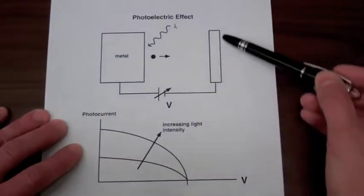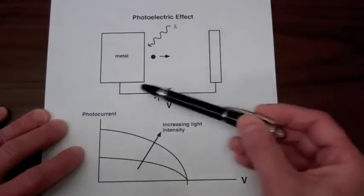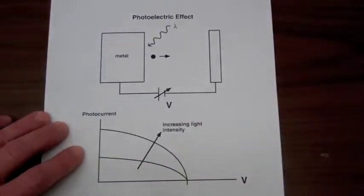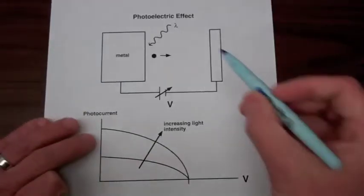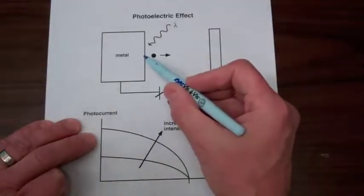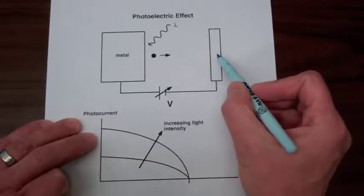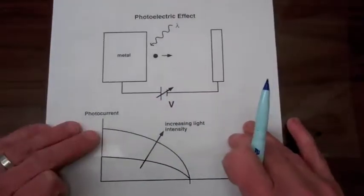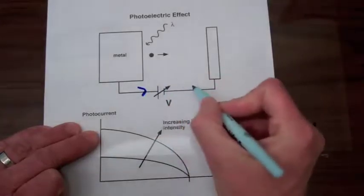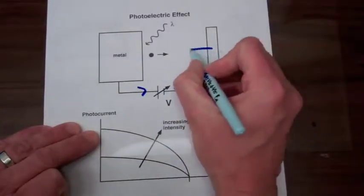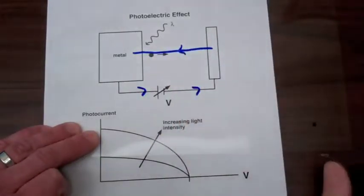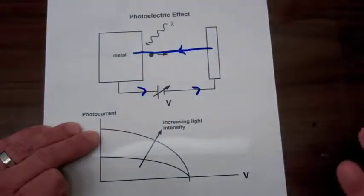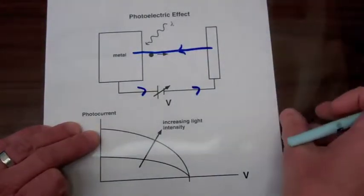Now if we have a second metal over here and connect them, a current will flow. The electron flowing from the metal on the left to the contact on the right will be a current flowing through our circuit. This is actually similar to what happens inside a solar cell.